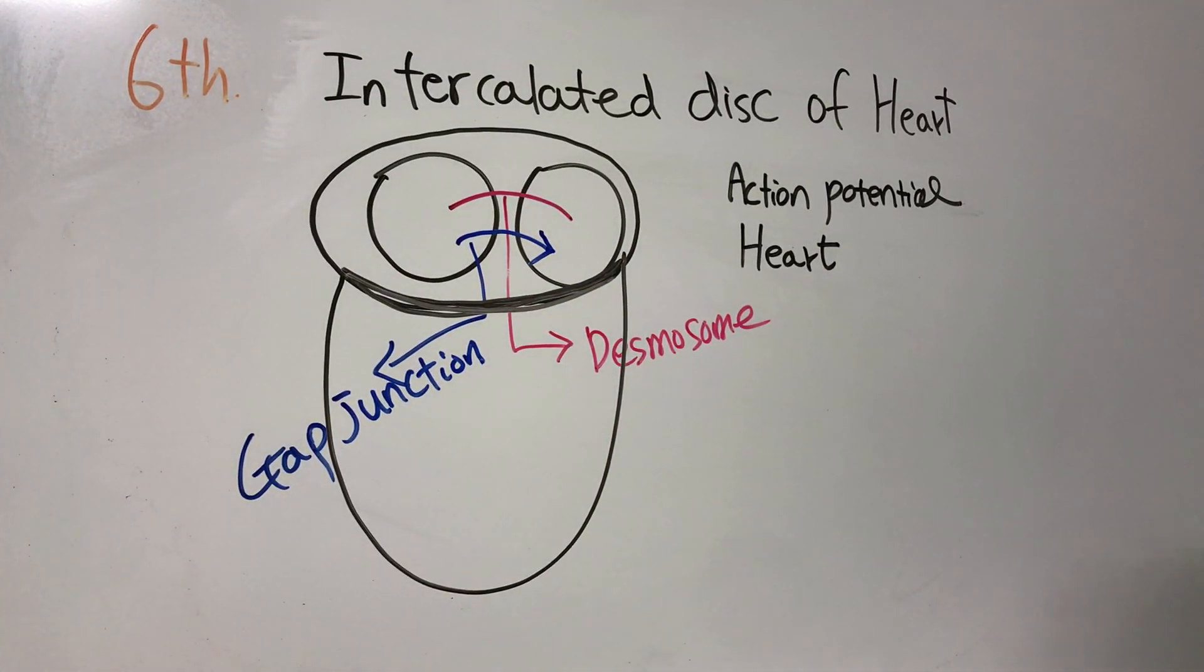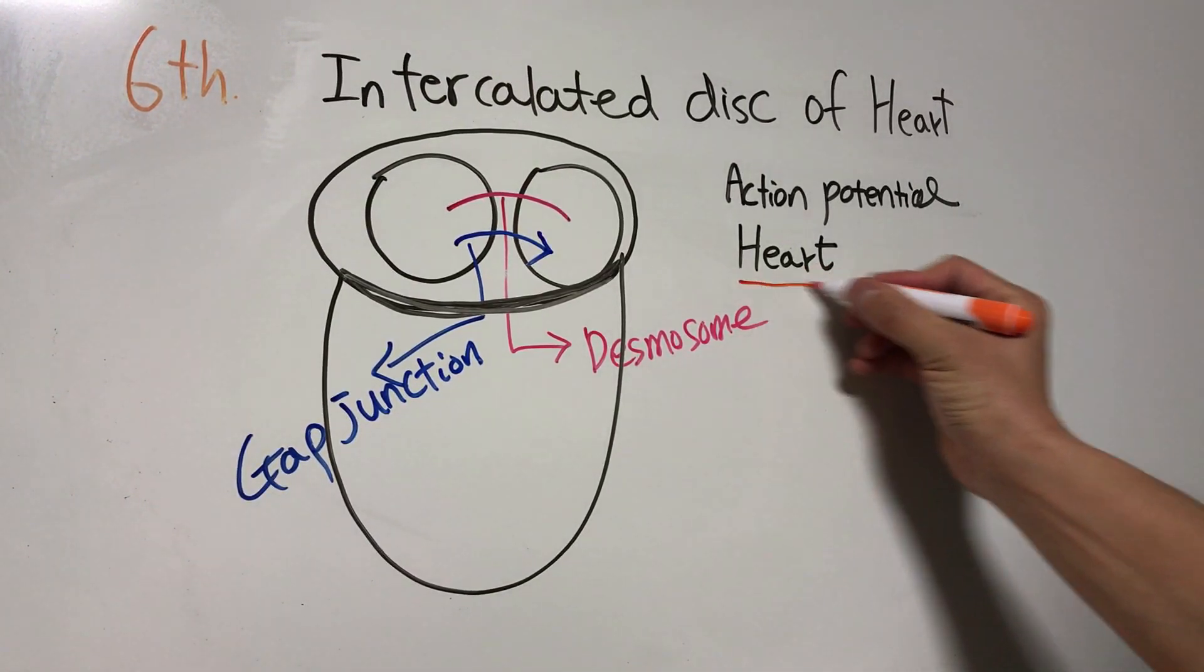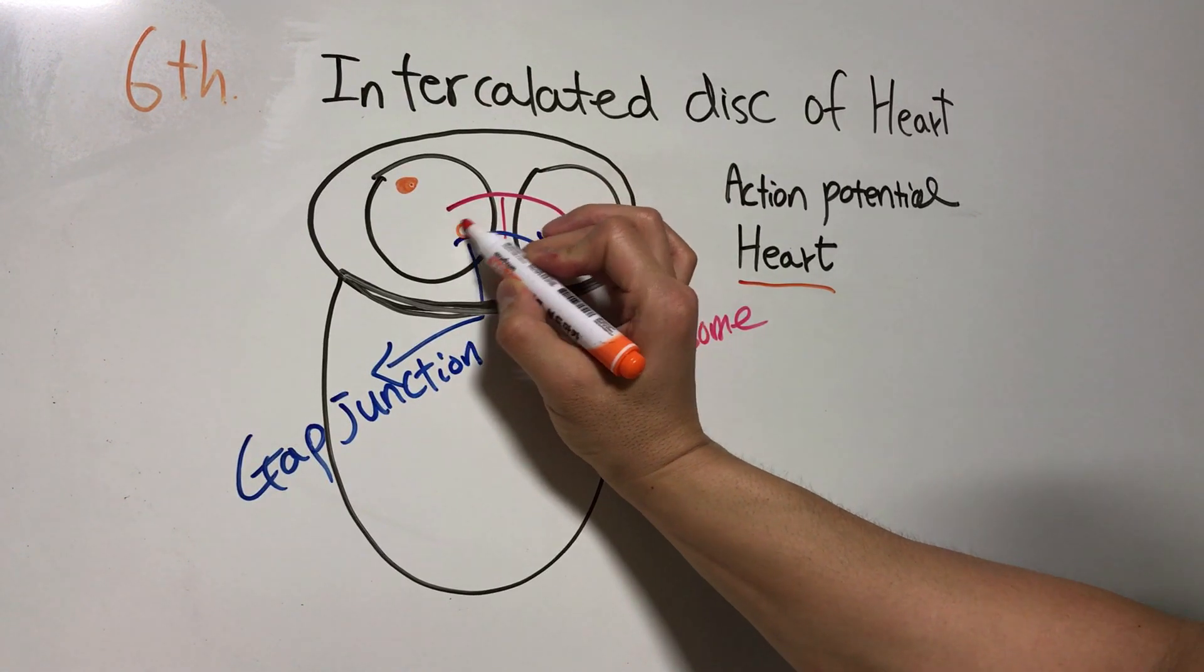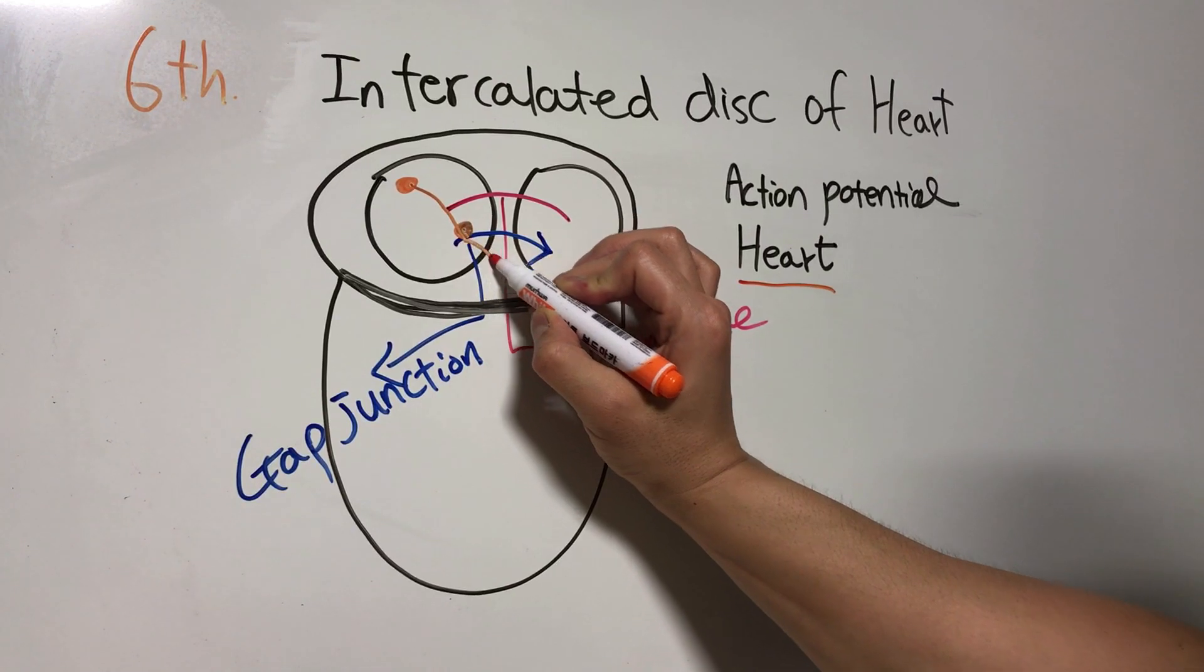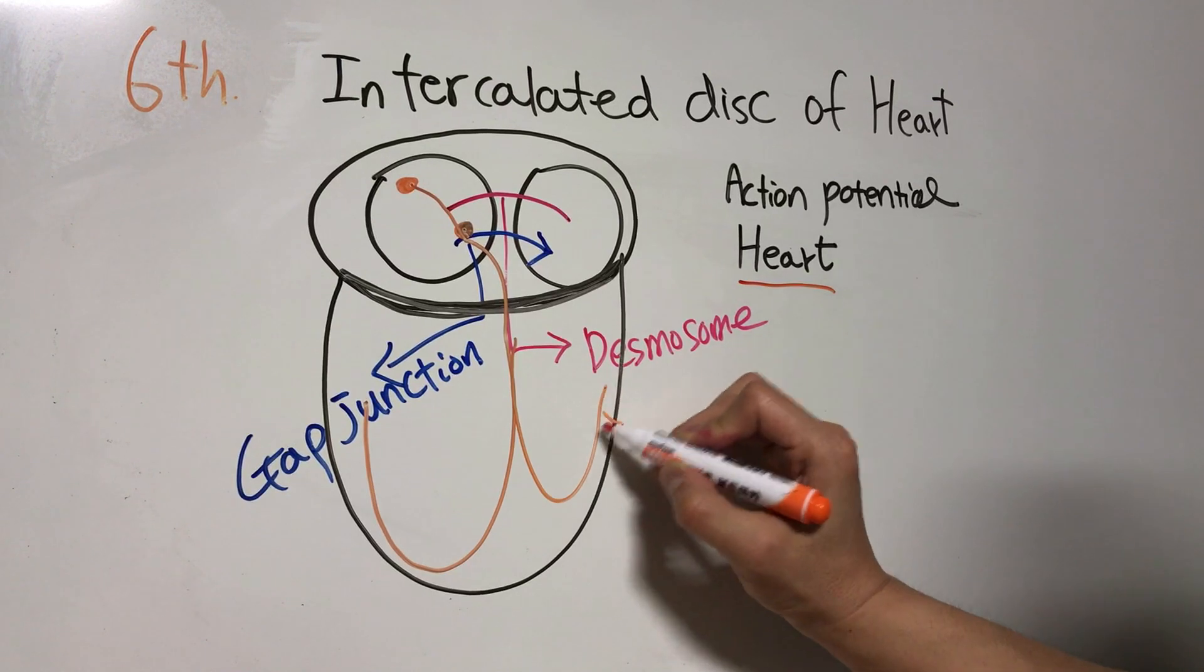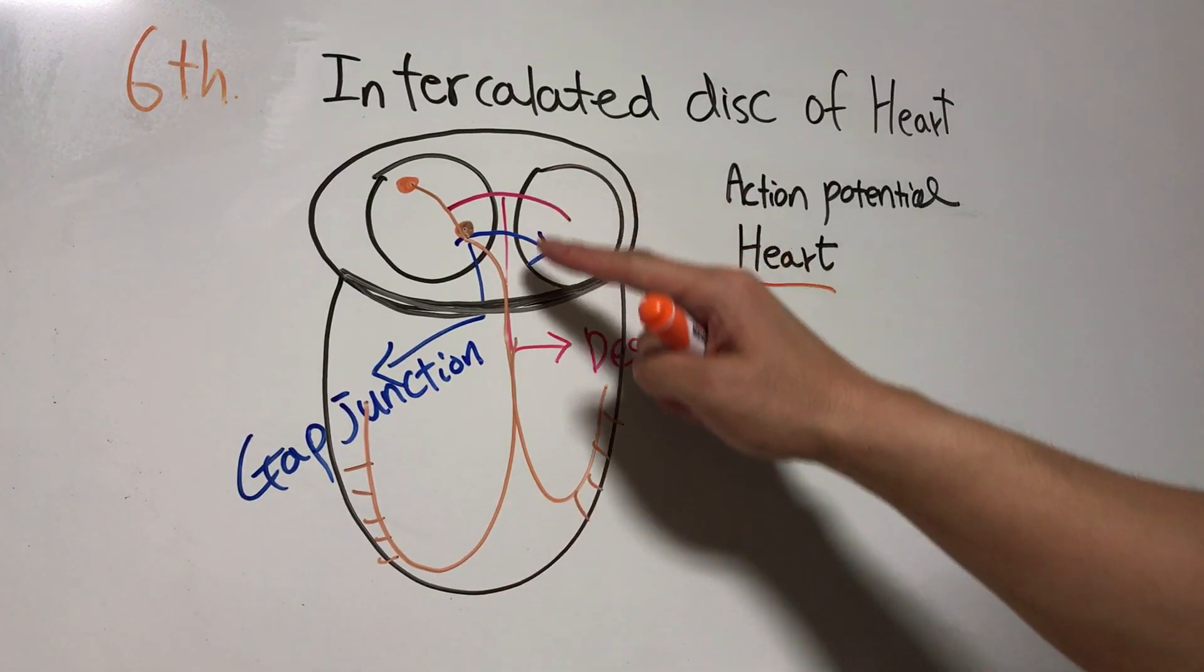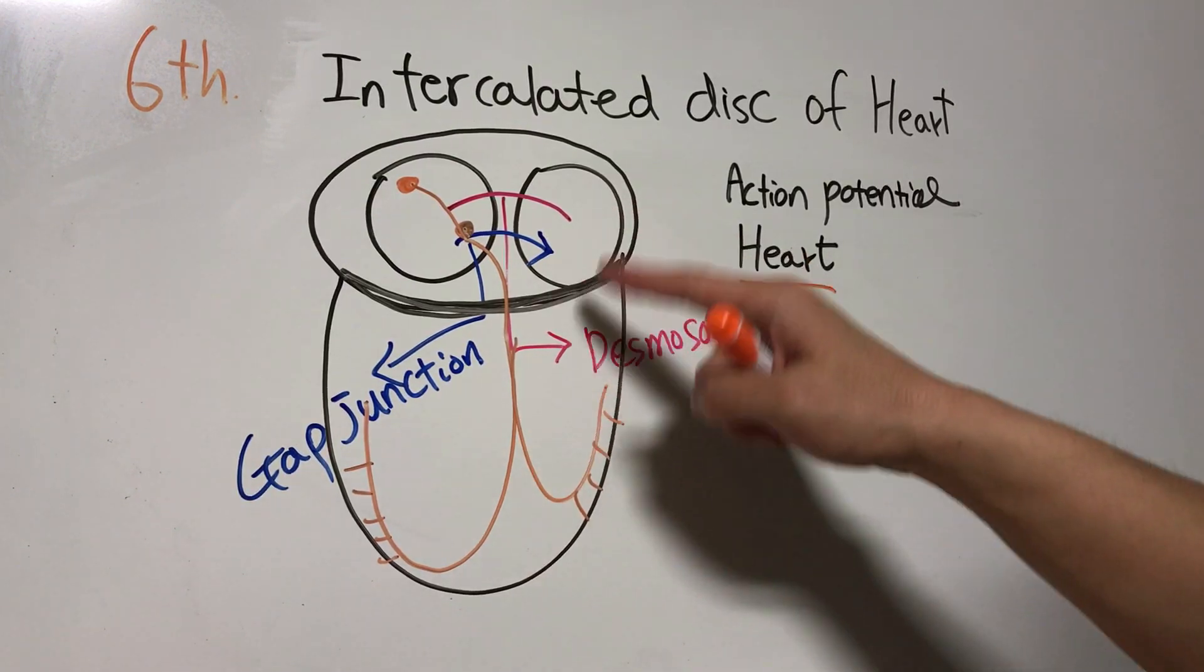So a special conduction system exists in the heart—a special conduction system so that the action potential of the atrium can be conducted to the ventricle.